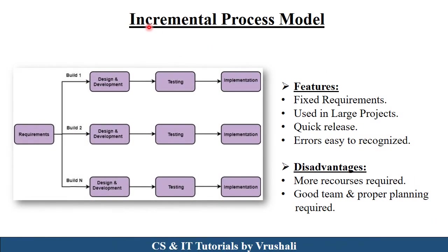The next model is the incremental process model. The concept of incremental process model is first they collect requirement from the customer and freeze it. After that, they divide those requirements into multiple modules. Suppose there are total eight requirements — first they take three requirements, design, develop, and test that particular module and deploy it to the customer. After that, they design the second module with the next requirements, design, develop, test and deploy it to the customer. And again they develop the remaining requirements, then design, develop, test and deploy to the customer.